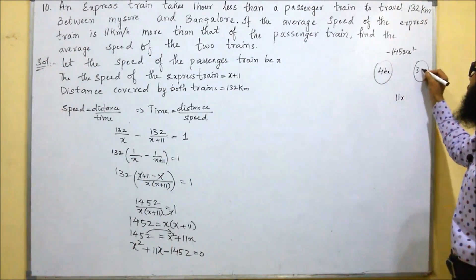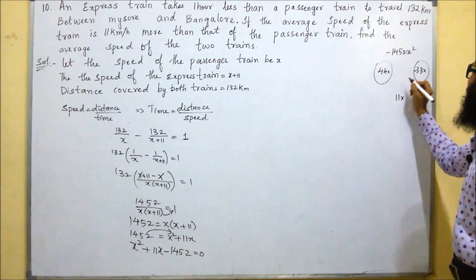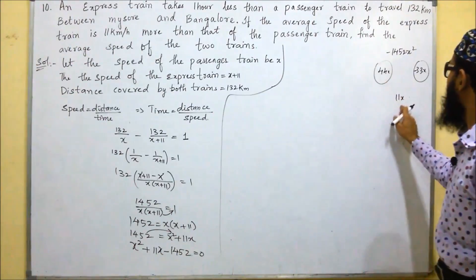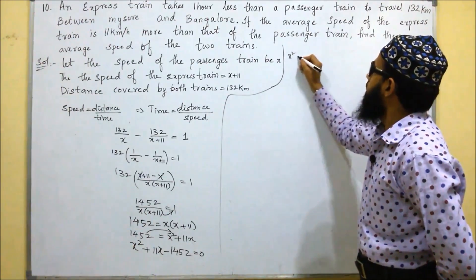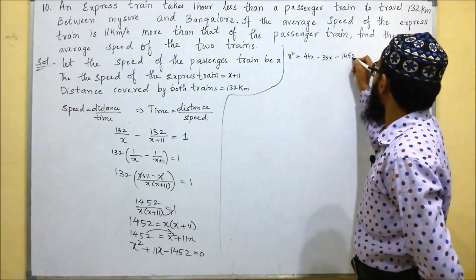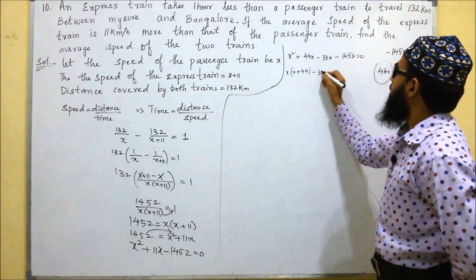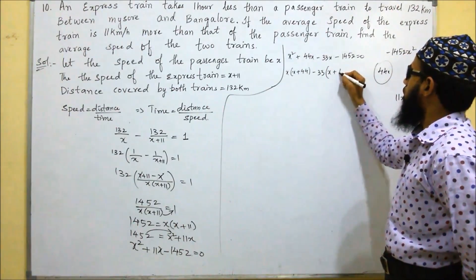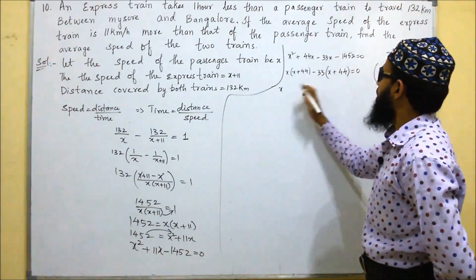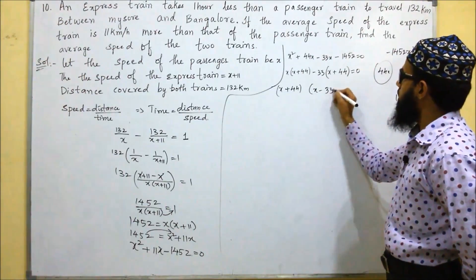Those two terms are 44x and minus 33x. Since the sign of the larger factor is positive, we keep plus 44x and use minus 33x. Substituting: x squared plus 44x minus 33x minus 1452 equals 0. Taking x common from the first two terms: x(x+44) minus 33(x+44) equals 0. So (x+44)(x-33) equals 0.